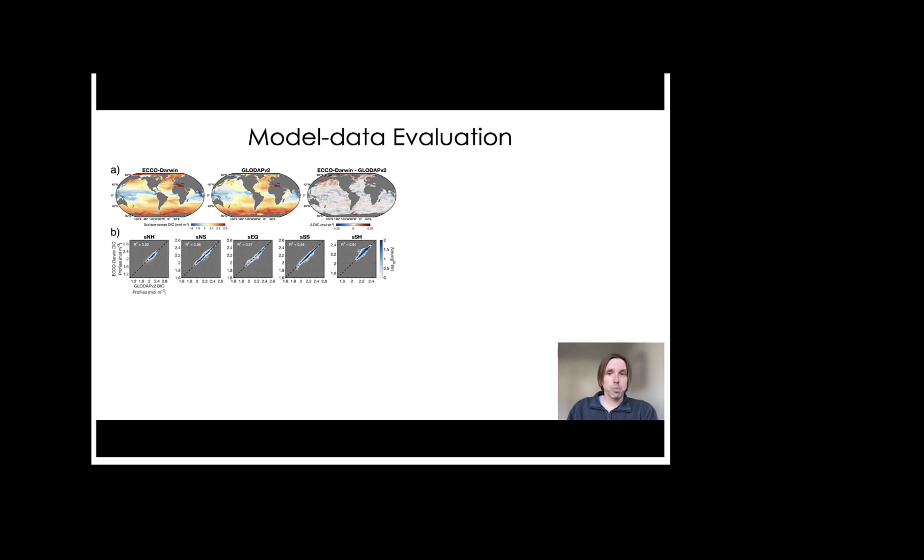So now that I've given a brief overview of ECCO-Darwin and the DIC budget method, I'm going to next focus on model data evaluation. In panel A here, I'm showing a comparison of ECCO-Darwin and GLODAP-v2 climatological DIC in the surface ocean. And this shows the general agreement between the model and observations in terms of representing the large scale patterns of DIC.